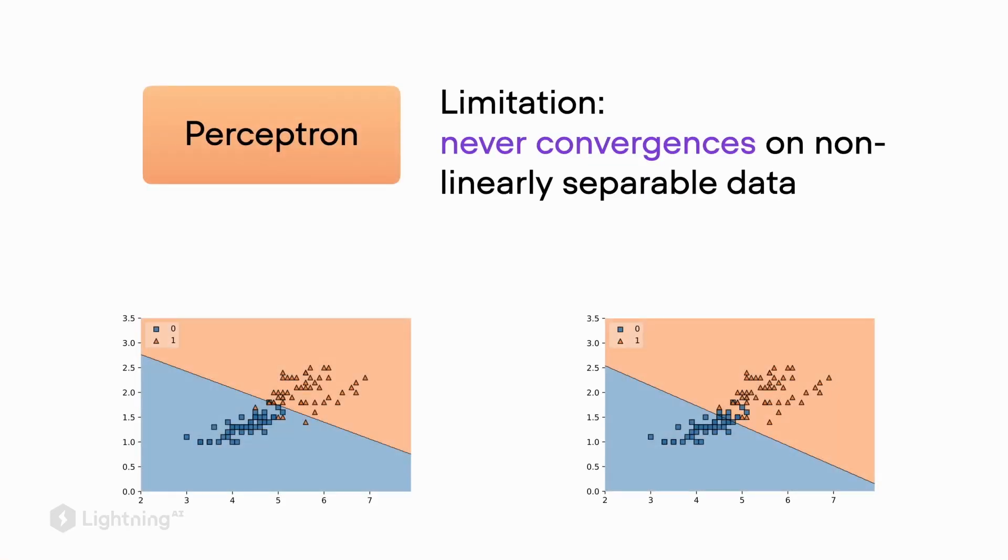In this video, we're going to talk about multi-layer neural networks and why we need them. Back in Unit 1, we introduced the perceptron algorithm. The perceptron is a capable classifier, but it has one big limitation.